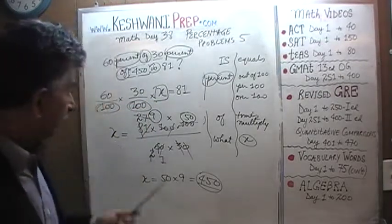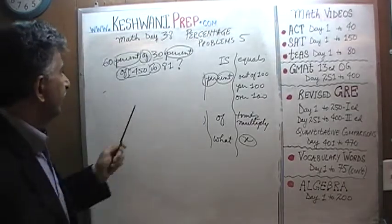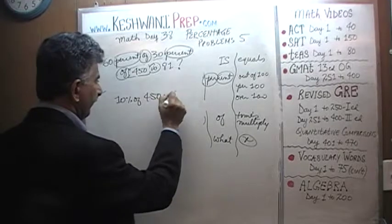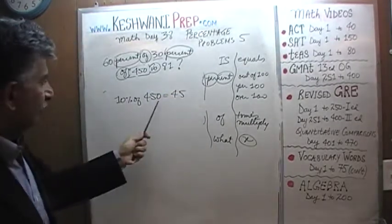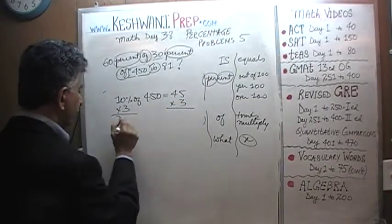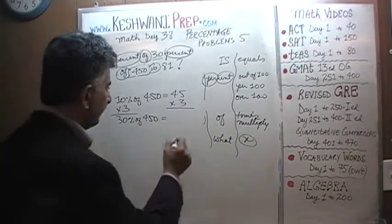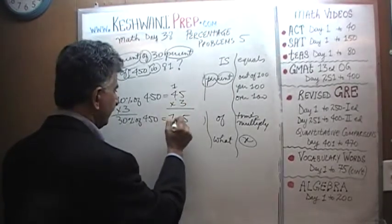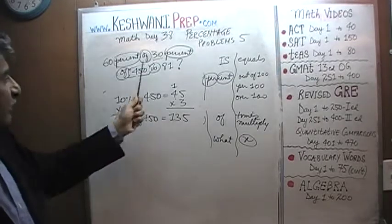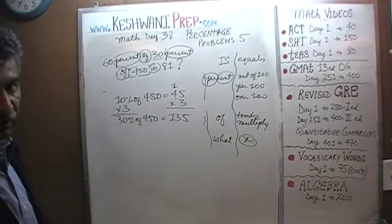Let's see if it makes sense. First, let's find 30% of 450. We know 10% of 450 is 45, therefore 30% is 3 times as much: 3 × 45 = 135. So 30% of 450 is 135. Now we have to take 60% of that.